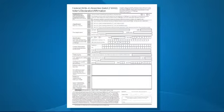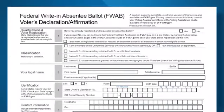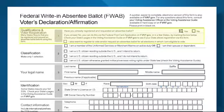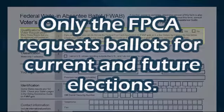The first step in completing the Federal Write-In Absentee Ballot, or FWAB, is to fill out the Voter's Declaration and Affirmation page. Begin by indicating in Block 1 whether or not you have registered and requested an absentee ballot. If your answer is no, you can submit the FWAB at the same time you submit an FPCA, but do not submit the FWAB if you have not submitted an FPCA. Only the FPCA requests ballots for current and future elections.